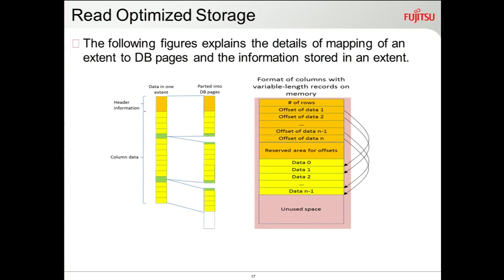The internal format of an extent contains: the number of records in the extent, the offsets of those records, followed by the data. This is a one-extent header page containing offset information and the data, which can span any number of pages. When new data is inserted, new pages are allocated to the extent and the offset entry is filled in the extent header, from which we can directly navigate to the data.